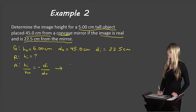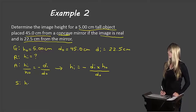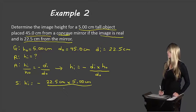Rearranging this equation for HI, we get HI equals negative DI times HO over DO. Substituting: HI equals negative 22.5 centimeters times 5.00 centimeters, divided by 45.0 centimeters.